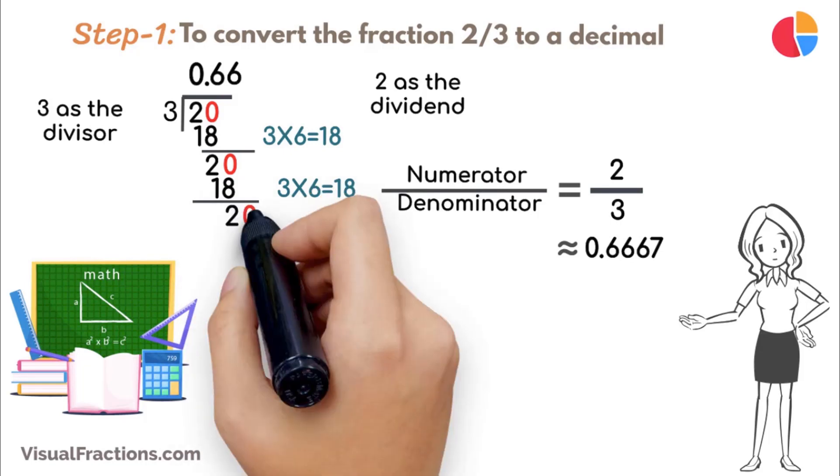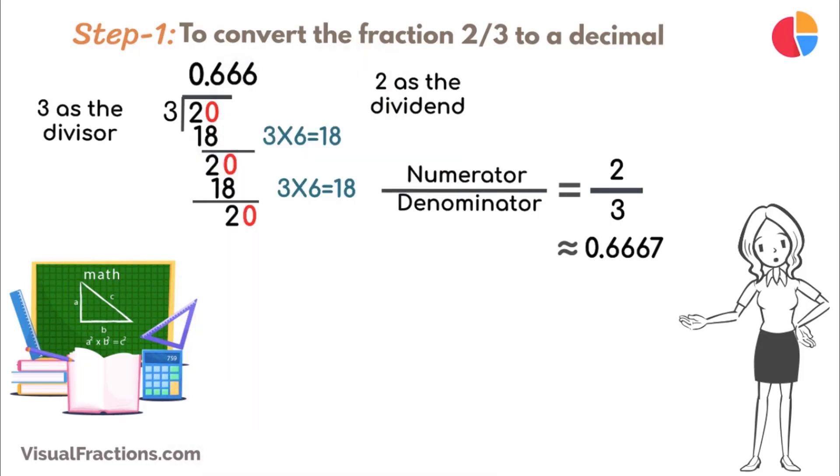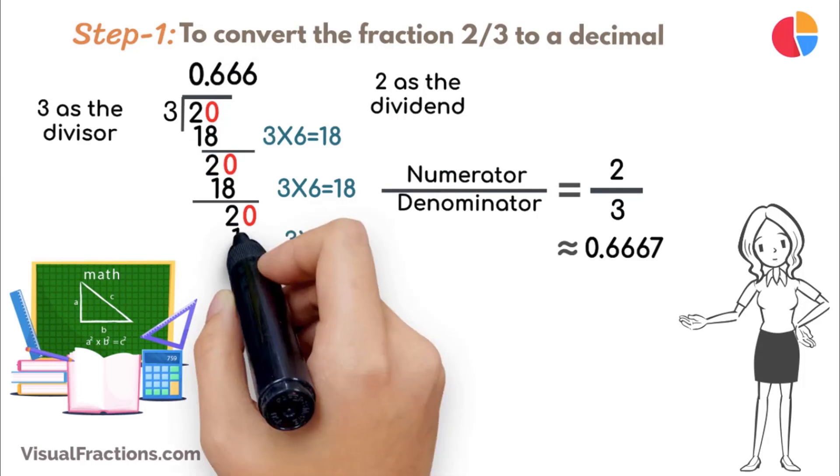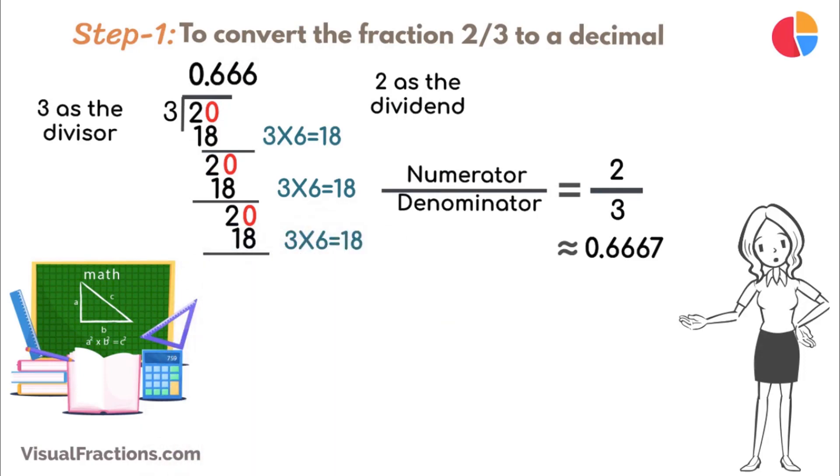This pattern continues, with the remainder consistently returning to 2, and the same calculation repeating. Each time, 3 goes into 20 six times, adding more 6s in the quotient, establishing a repeating decimal sequence. Thus, the decimal extends as 0.666, and so forth.